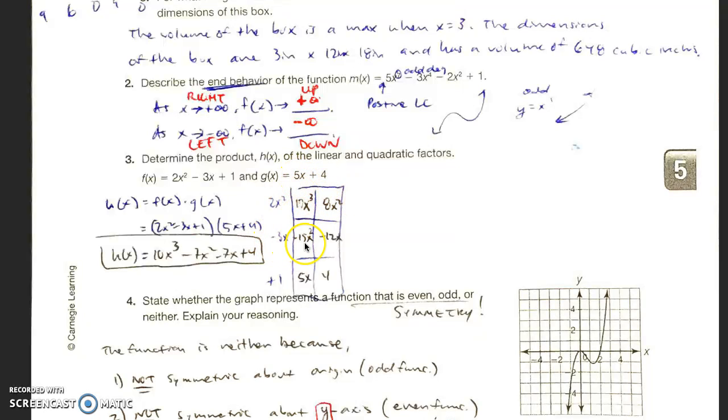5x times negative 3x is negative 15x squared. Negative 3x times 4 is negative 12x. 5x times 1 is 5x, and 1 times 4 is 4. So I get h of x equals 10x to the third minus 7x squared minus 7x plus 4. That's my answer. Notice those are in descending order.